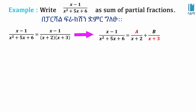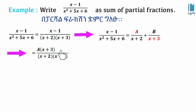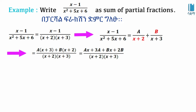So A over (x + 2) plus B over (x + 3) equals (x - 1) over (x + 2)(x + 3). Multiplying through by the denominator (x + 2)(x + 3), we get A times (x + 3) plus B times (x + 2) equals x - 1.